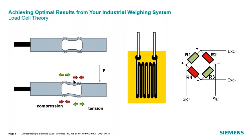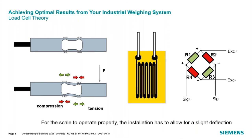Some of those strain gauges are in compression and some are in tension. To further increase the effect, they're put into a Wheatstone bridge, with the strain gauges in compression opposing each other and the strain gauges in tension loading each other. The most important point is that in order for a load cell to operate properly, you must have this deflection. Whatever load carrier you're using — a bin weighing system, belt scale, or other application — that load carrier has to be able to deflect down slightly, typically less than a millimeter. If anything restricts that downward movement, the scale is not going to perform well.